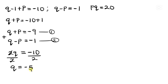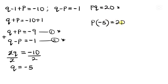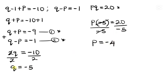To find p, substitute q equals negative 5 into equation 3: p times negative 5 equals 20. Dividing both sides by negative 5, p equals negative 4. So q equals negative 5 and p equals negative 4.